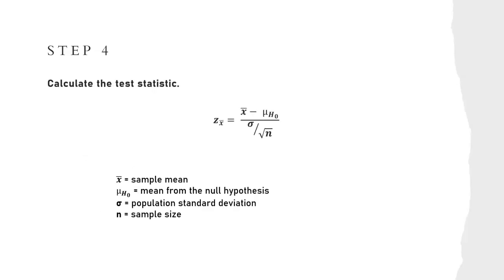Once we have our critical value, then we can calculate our test statistic. This is calculating a z-score. And so we can see our z-score formula here, where we do x-bar minus mu of H sub zero. So that's your sample mean minus the mean from your null hypothesis, divided by your standard error. So population standard deviation over the square root of your sample size. And that's going to kick back a z-score. And that z-score is your test statistic.